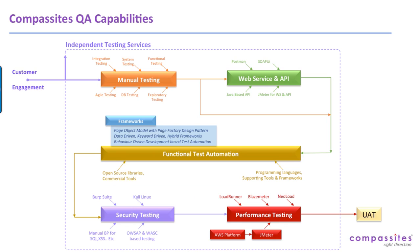At Composites, as part of customer engagement, we provide the whole suite of services like manual testing, web service and API testing — both automated and manual. We have test automation frameworks like Page Object Model with Page Factory design pattern, data driven frameworks, keyword driven approaches, and hybrid framework, which is actually the RAFT framework. We also have Behavior Driven Development (BDD) based test automation frameworks.